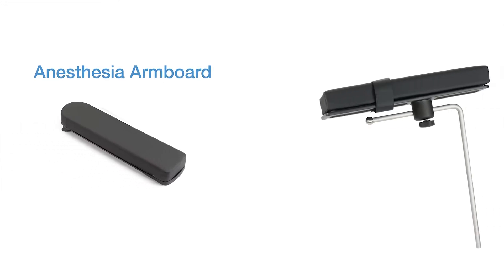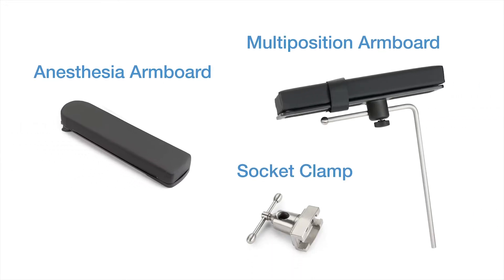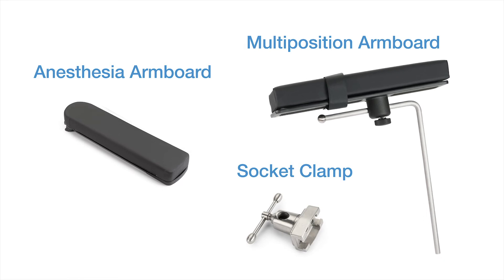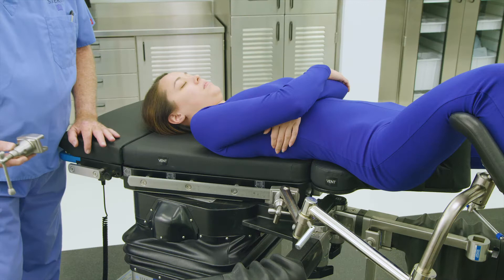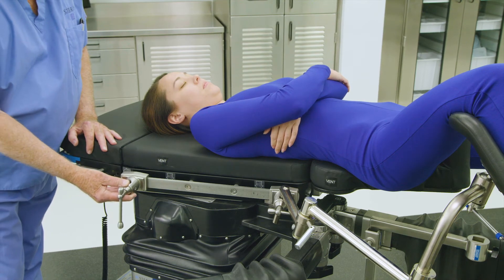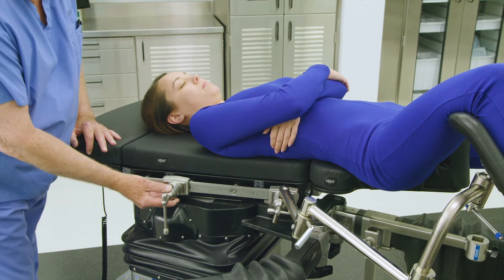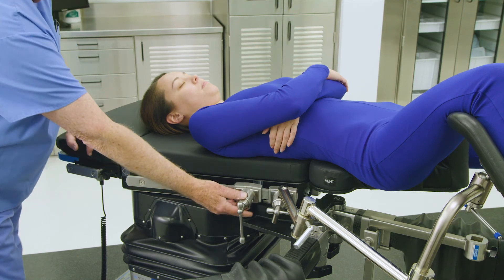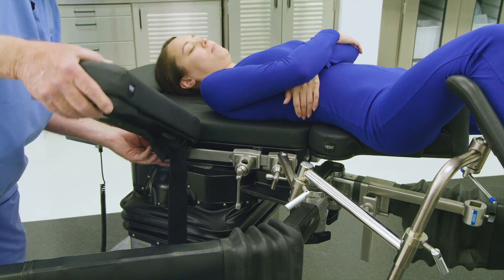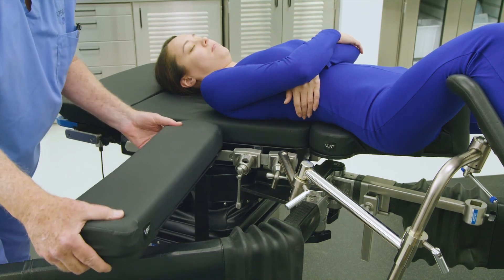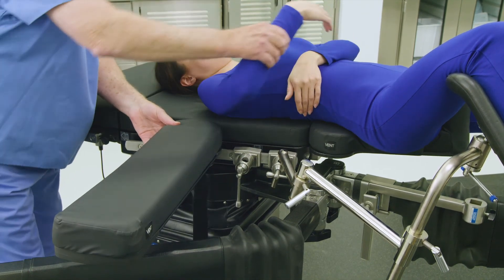The OT-1000 series table is equipped with both an anesthesia arm board to help position the arm on the non-operative side of the body, and a multi-position arm board to help position the arm on the operative side of the body, to ensure patient arms are properly positioned during the procedure. Before attaching an anesthesia arm board, first apply a socket clamp to the side rail on the non-operative side of the table. Next, apply the standard anesthesia arm board to the side rail on the non-operative side and adjust as needed to accommodate proper arm position.